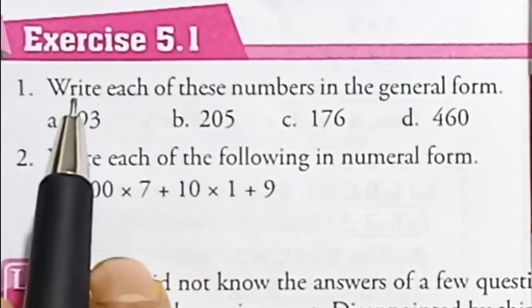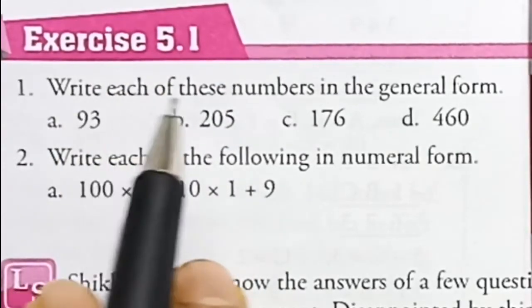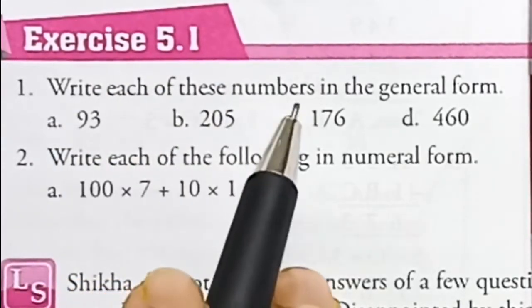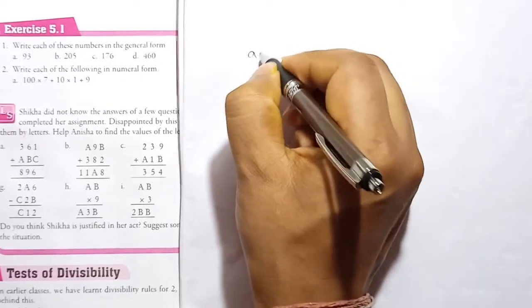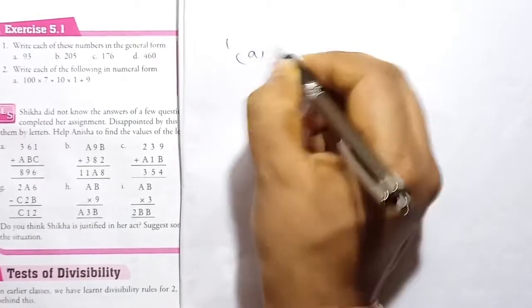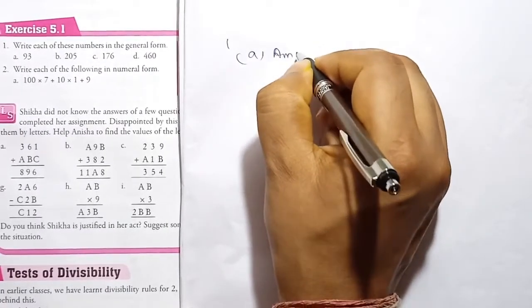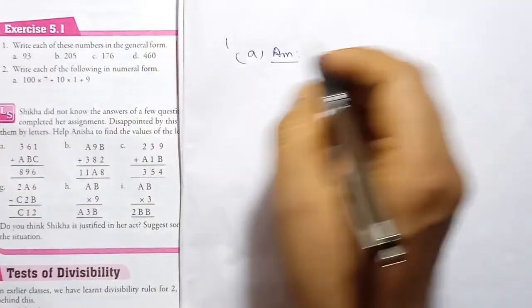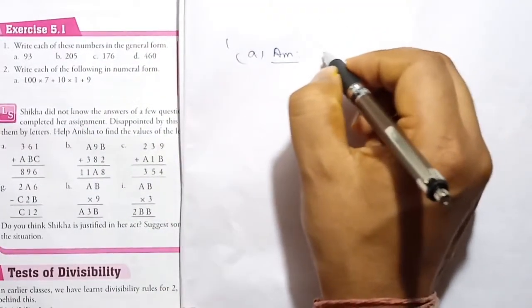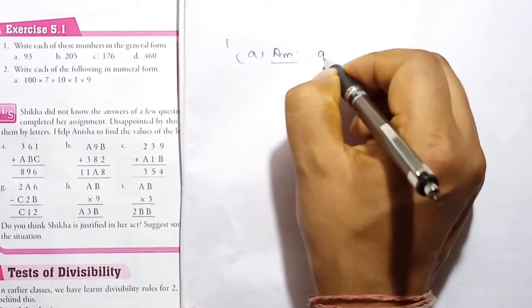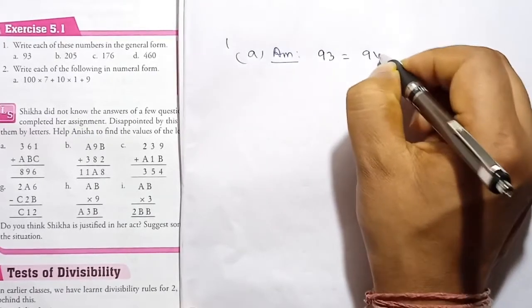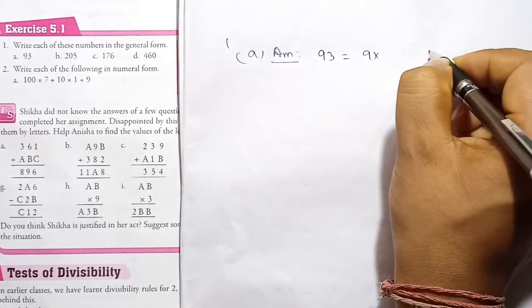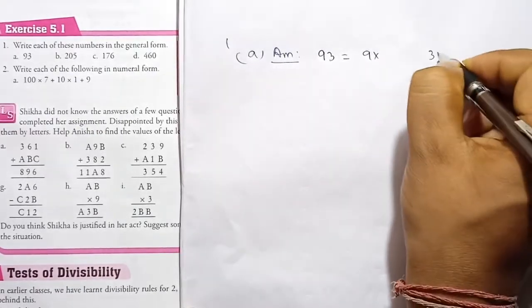Exercise 5.1, Question 1. Write each of these numbers in the general form. Question 1A. General form means the expanded form. So here we write 93 equal to 9 into 10 plus 3 into 1.